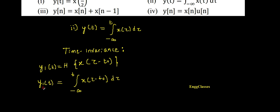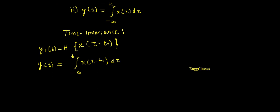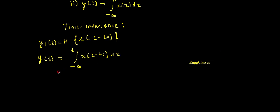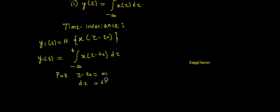Before considering the next half of the statement, I can simplify this further. What I do here is put τ - t0 equal to m. So let me put τ - t0 = m. Similarly, dτ is going to be dm. T0 is a constant, differentiation of that is zero, so dτ = dm. And what about the limits?